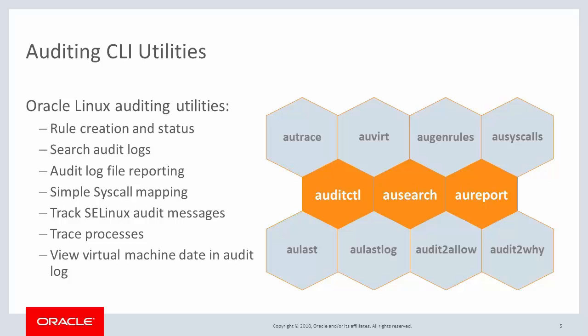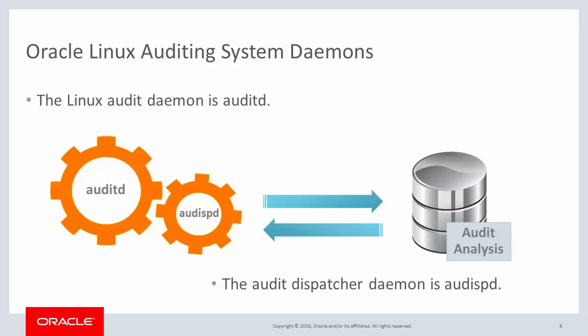There are a number of other useful utilities also provided to support your auditing implementation. The Oracle Linux audit daemon is called AuditD. It takes care of the auditing functions, tracking rules, violations, and writing event information to the audit log file. Another daemon called AUDISPD is the audit dispatcher daemon. It relays audit event notifications to audit analysis systems and applications on remote machines for real-time analysis.